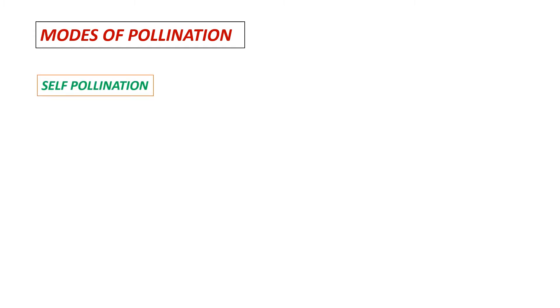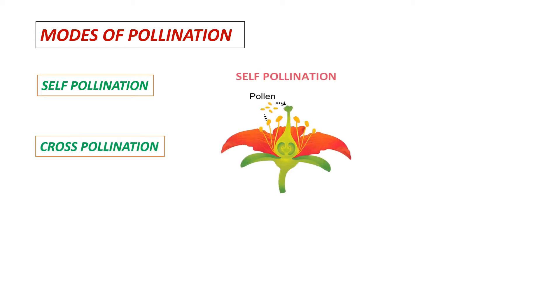Now let us see what are the different modes of pollination. Self pollination: when pollen from an anther falls on the stigma of the same flower, it is called self pollination or autogamy. Cross pollination: when pollen from the anther of one flower of one plant falls on the stigma of another flower of another plant, it is called cross pollination or allogamy.